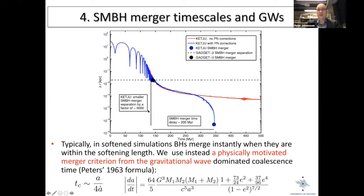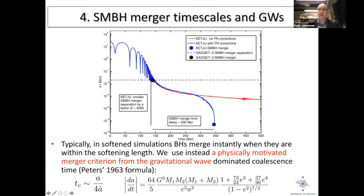We use the Peters formula for the change in semi-major axis due to gravitational wave emission at PN 2.5 level. The post-Newtonian approximation breaks down at roughly 10 Schwarzschild radii, where we can no longer resolve the dynamics. But this is far better than a softened simulation where the dynamics breaks down at tens of parsecs — many orders of magnitude larger than tens of Schwarzschild radii.